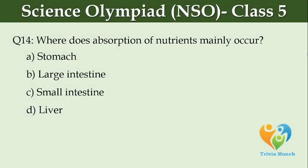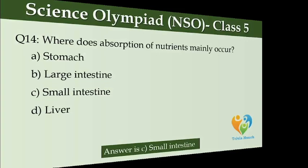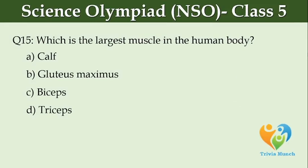Where does absorption of nutrients mainly occur? Option A: stomach. Option B: large intestine. Option C: small intestine. Option D: liver. Which is the largest muscle in the human body? Option A: calf. Option B: gluteus maximus. Option C: biceps. Option D: triceps.